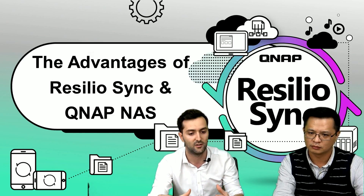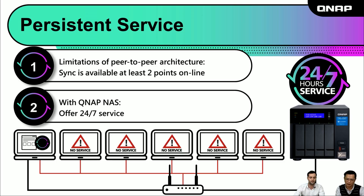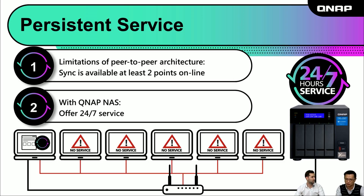It's like a hybrid of ResilioSync and QNAP NAS. As we know, ResilioSync uses a peer-to-peer architecture — if you want to sync files, you need at least two points online. Synchronization is not workable on a single computer. We can set QNAP NAS as one point of the ResilioSync shared folder, and it will offer 24/7 service, always keeping your files at the latest update.